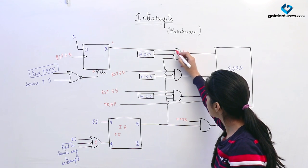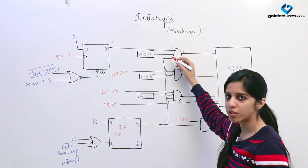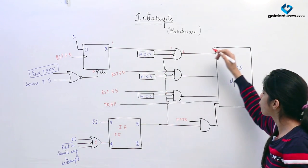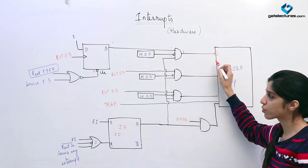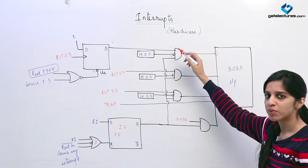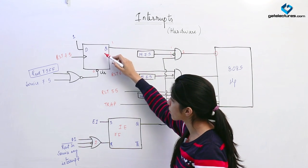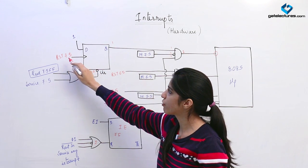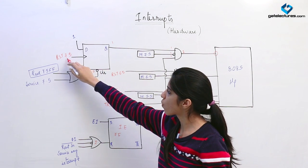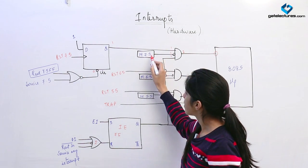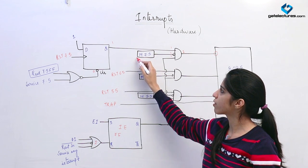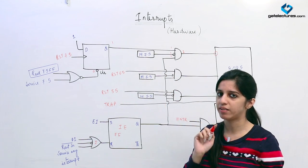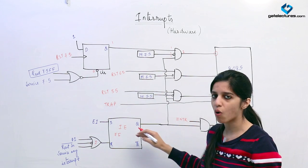An AND gate gives output 1 only when all its inputs are 1. For RST 7.5 to appear at the microprocessor, all inputs of this AND gate must be 1. One input comes from this D flip-flop, which gives output 1 when RST 7.5 is applied as a clock. This M 7.5 is mask 7.5 — it is used to mask an interrupt. Masking is used when we want to disable a single interrupt but keep all other interrupts enabled.